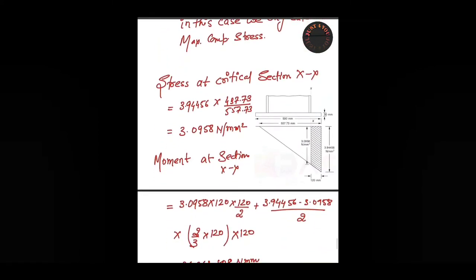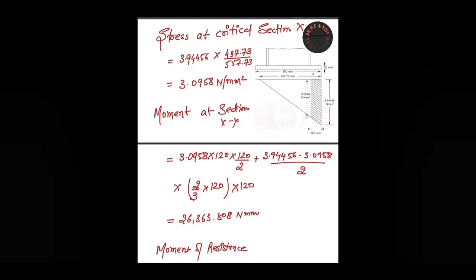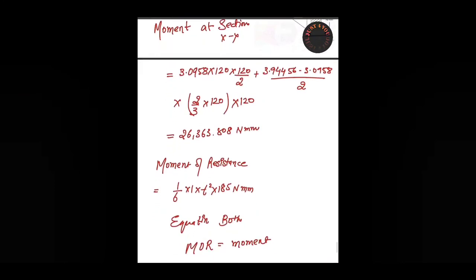Now we find the moment of this hashed area: 3.098 times wl²/2 for the triangle, with the area acting at the CG distance of 2/3 of 120 mm. Solving this, we get the moment as 26,363.808 N·mm. The moment of resistance equation is 1/6 × 1 × t² × 185, where 185 is σbs, and it will be equal for all steel grades.